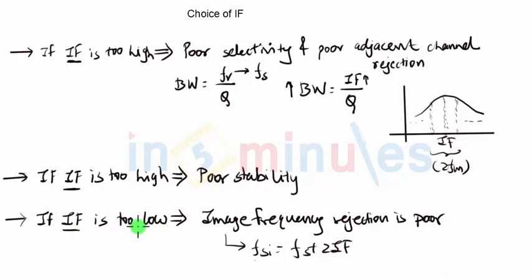So if IF is too low then the gap between FSI and FS will reduce. This will reduce the value of rho and this will further reduce the value of alpha. In other words, FSI and FS will be close to each other so that whenever the receiver is tuned to FS there are good chances that FSI will also enter the receiver and it will be difficult to remove it once it reaches the mixer stage. Hence IF should not be too low to keep the image frequency out of the receiver.